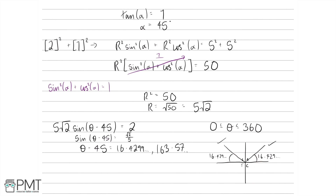These are the answers for θ minus 45, but we're looking for θ. So let's add 45 to both solutions: 16.429° plus 45 gives 61.4°, and 163.57° plus 45 gives 208.6°. Both are to one decimal place, as the question required.